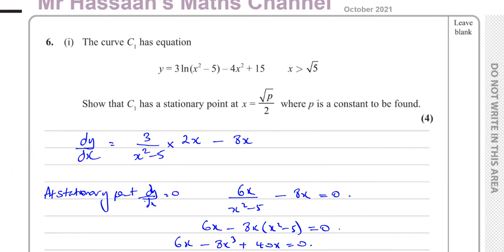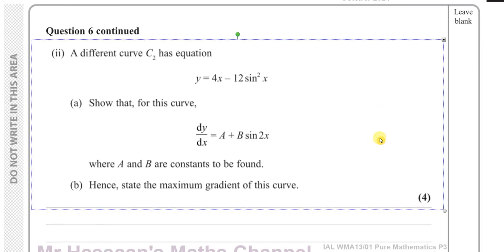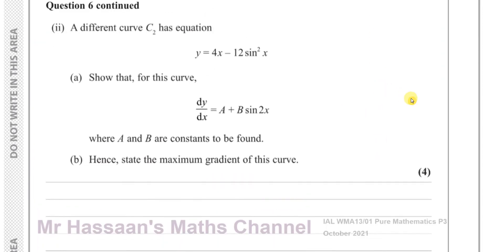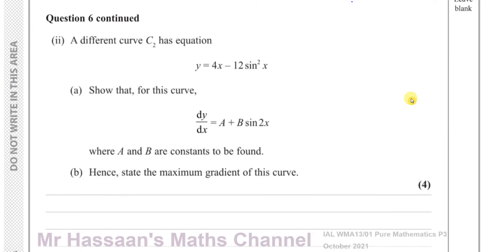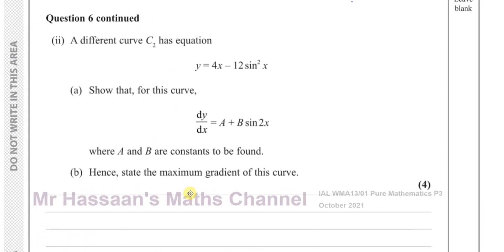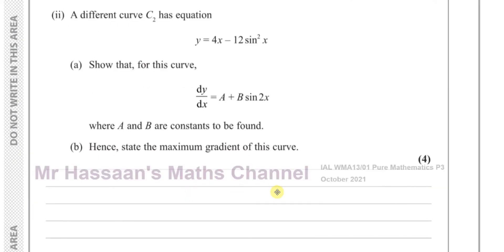Now for part 2. A different curve C2 has equation y equals 4x minus 12 sine squared x. Show that for this curve dy/dx equals a plus b sine 2x, where a and b are constants to be found, and hence state the maximum gradient of this curve. Let's differentiate. I'll write sine squared x as (sine x) squared to make it clear how to differentiate properly.